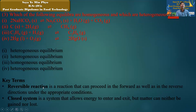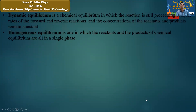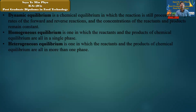Key definitions: A reversible reaction is a reaction that can proceed in the forward as well as in the reverse direction under appropriate conditions. A closed system is a system that allows energy to enter and exit, but matter can neither be gained nor lost. Dynamic equilibrium is a chemical equilibrium in which the reaction is still proceeding at equal rates of the forward and reverse reaction, and the concentrations of the reactants and products remain constant. Homogeneous equilibrium is one in which the reactants and products are all in a single phase. Heterogeneous equilibrium is one in which the reactants and products are in more than one phase.